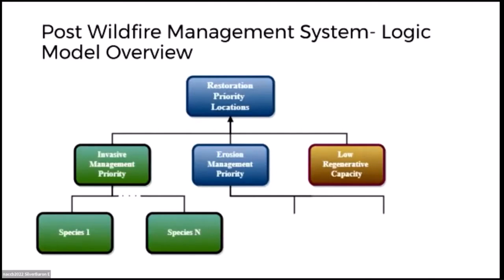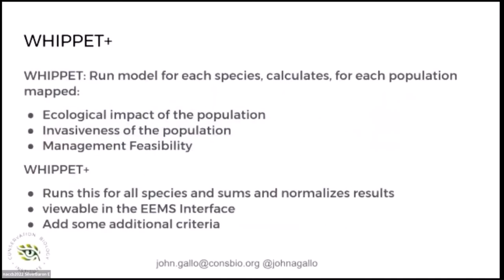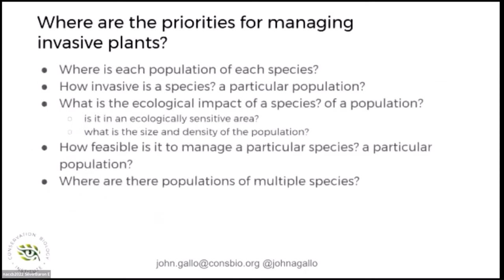The post-wildfire management system logic at the highest level consists of invasive management priority, erosion priority, and low regenerative capacity. For invasive management priority, we built on the WHIPPET tool — calling it WHIPPET Plus. This is a fantastic ArcGIS model that maps all populations of each species on the landscape and their relative priority based on ecological impact, invasiveness, and management feasibility. We re-engineered it into EAMS so it's transparent and replicable, runs automatically for all species, and we added additional criteria that can be turned on and off.